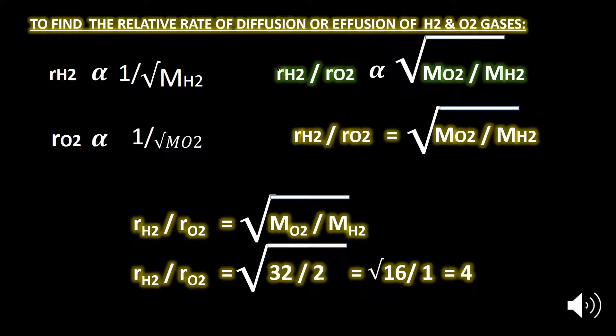Substituting the values: the rate of diffusion of hydrogen over the rate of diffusion of oxygen equals the square root of 32 over the square root of 2. This simplifies to the square root of 16 over 1, which equals 4. This means that hydrogen gas has 16 times less molecular mass than oxygen gas, and therefore hydrogen diffuses 4 times more rapidly than oxygen gas. It's proved.